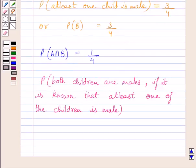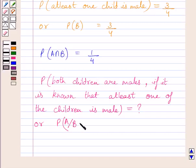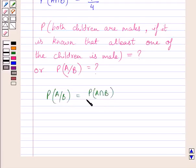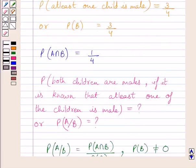Now we have to find the probability that both children are males if it is known that at least one of the children is male. Or we can say, we have to find the conditional probability of event A when event B has already occurred. We know that probability of event A when event B has already occurred is equal to probability of A intersection B upon probability of B, where probability of B is not equal to 0. Clearly, probability of event B is equal to 3 upon 4, and probability of A intersection B is equal to 1 upon 4.